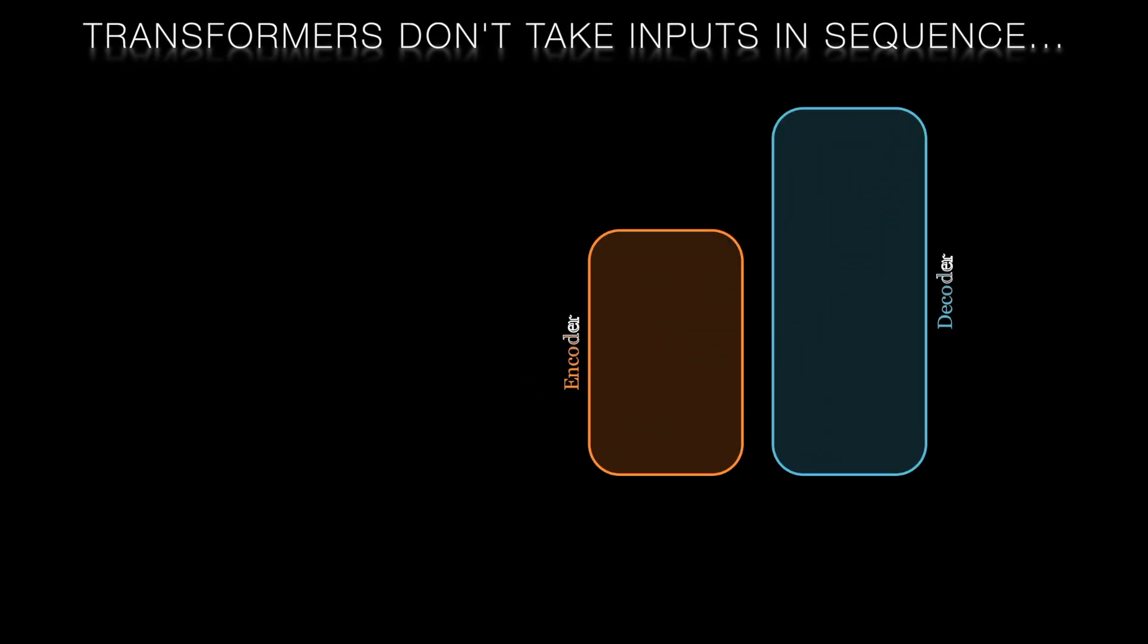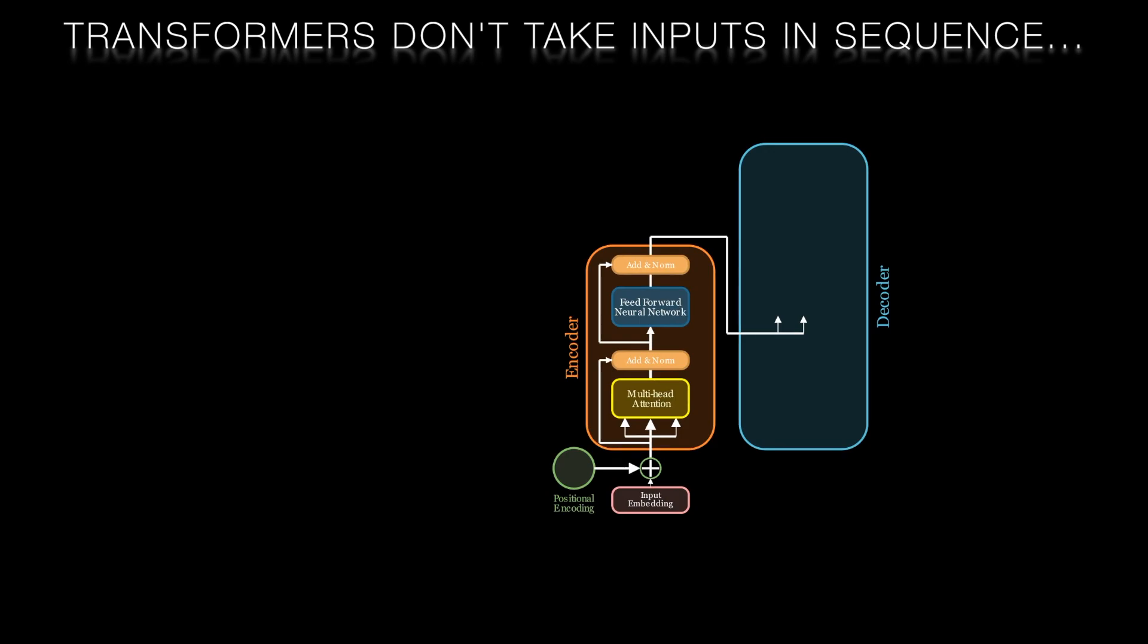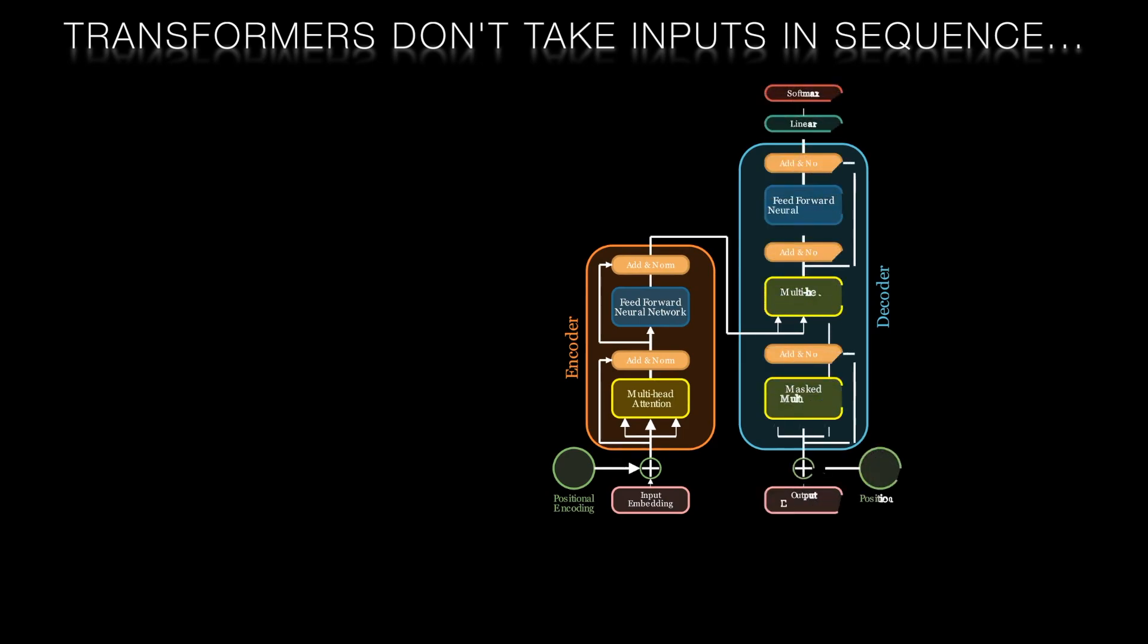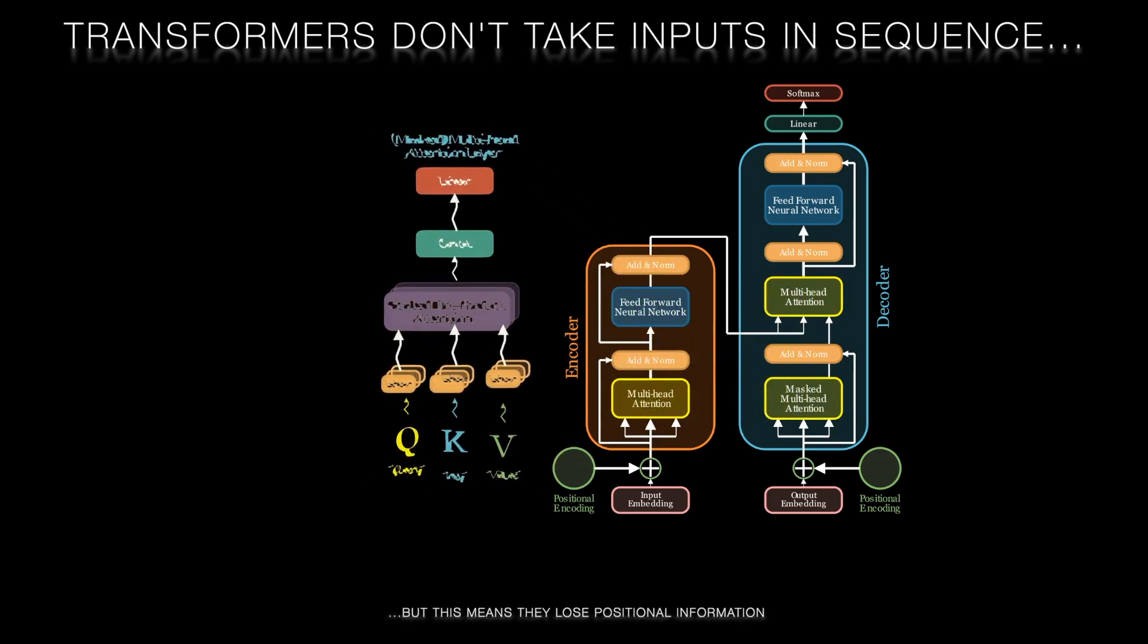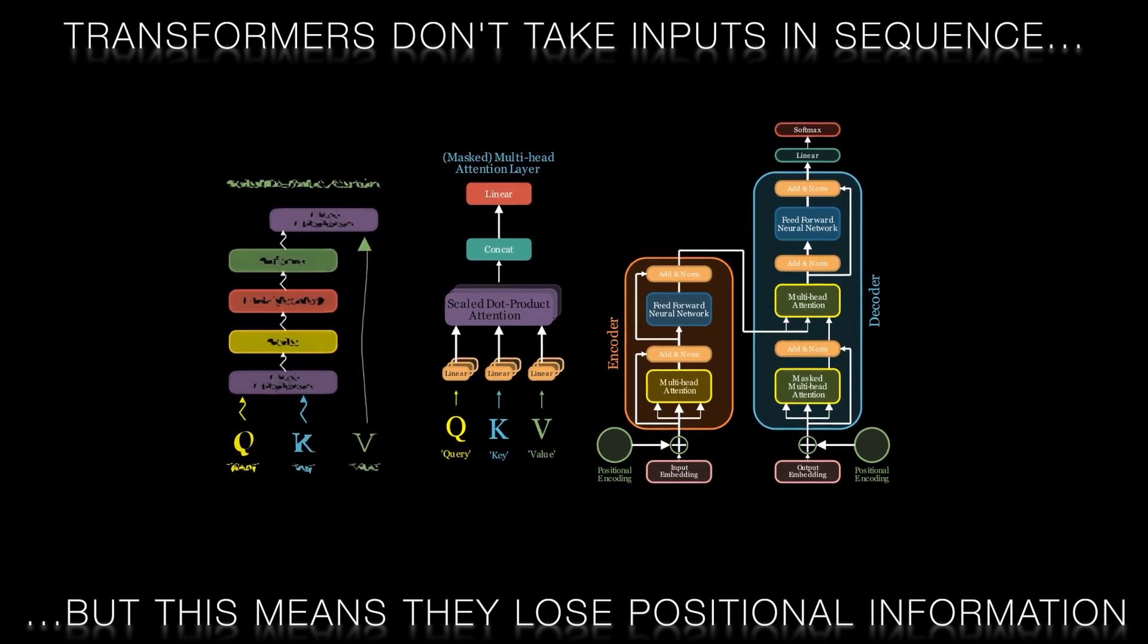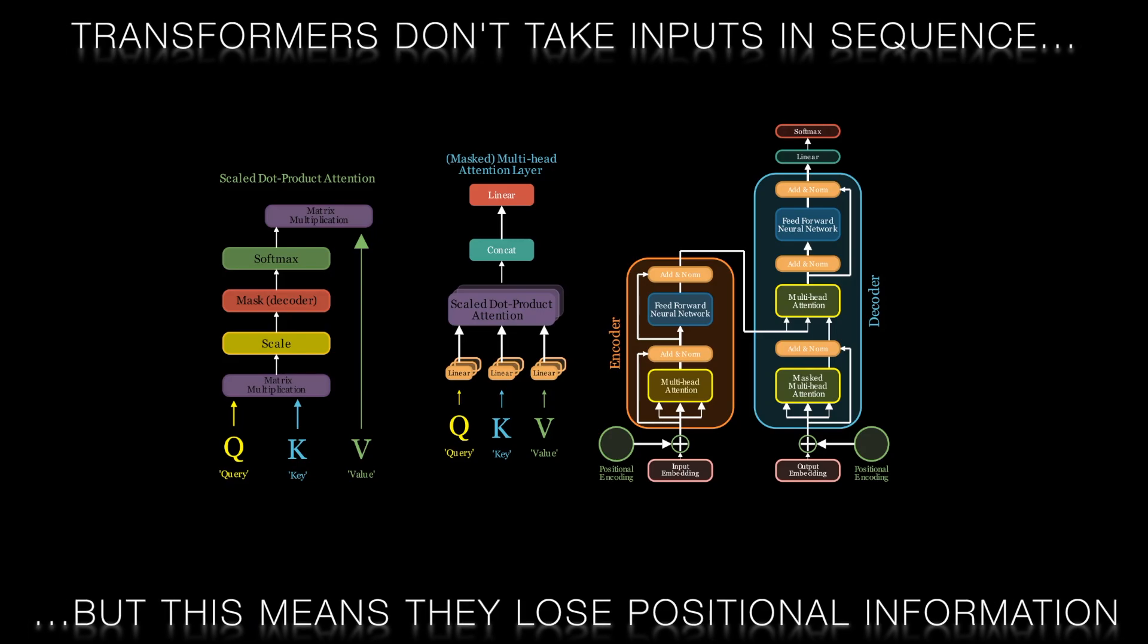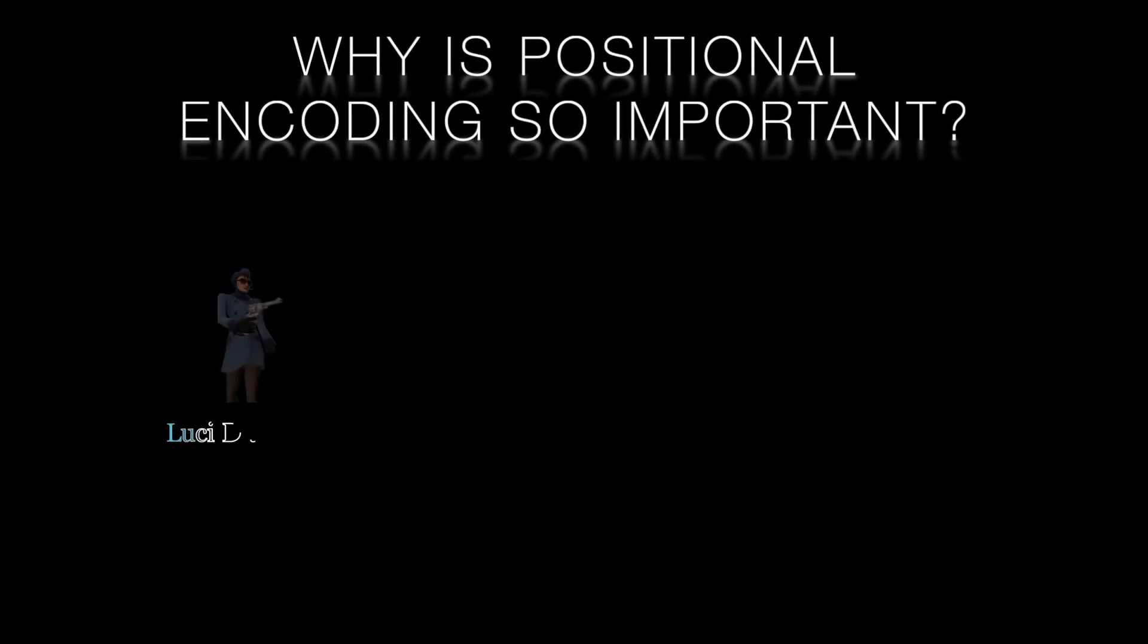Transformers were developed to address these problems: the vanishing/exploding gradients and the lack of parallelization. They process an entire block of text at once, but in so doing they lose the positional information that is implicit in the input and output sequences in RNNs. It's for this reason that transformers need positional encoding.